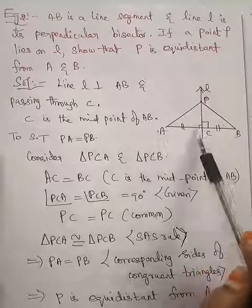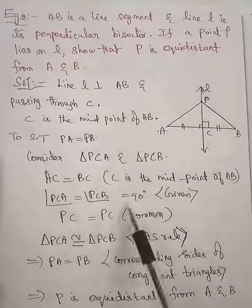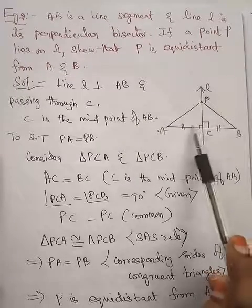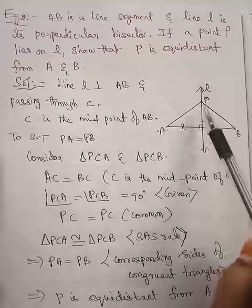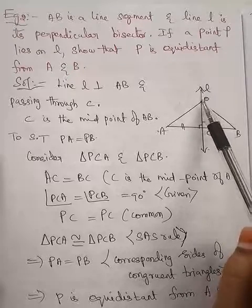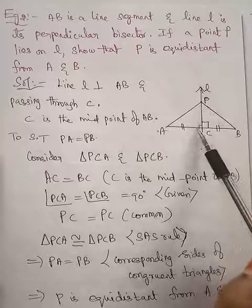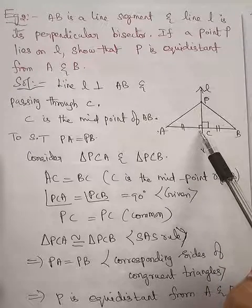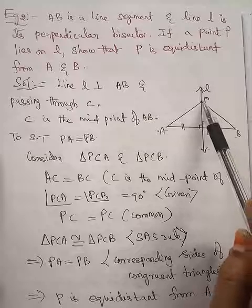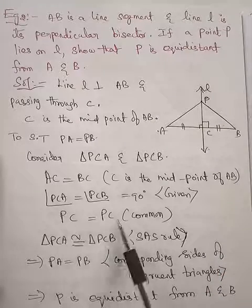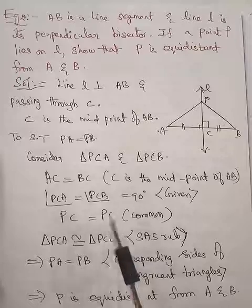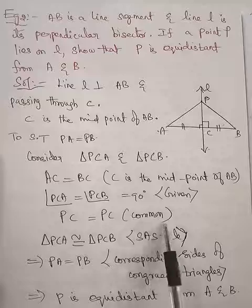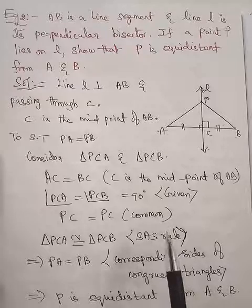Angle PCA is 90, PCB equal to 90 degrees. This is given because perpendicular means making angle 90 degrees. Also, PC length. See, in triangle PCA, PC length is there. In triangle PCB, PC length is there. So in both triangles you have PC side, so the length is equal. PC equal to PC. In this triangle also you have PC, in this triangle also you have PC side. So that is called common.